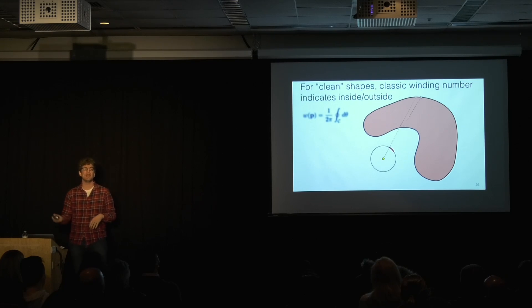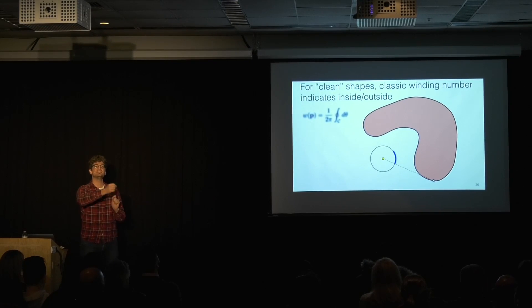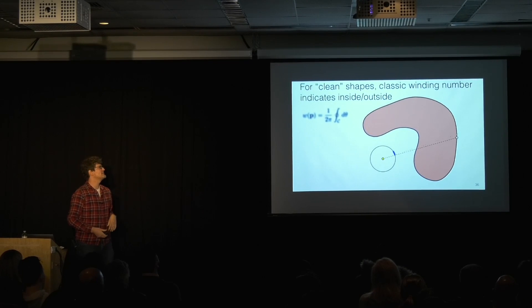If we watch what happens when we're outside of the shape, we see that any positive amount we go in one way around the circle gets canceled out by some negative length in the other direction, and we add up to 0.